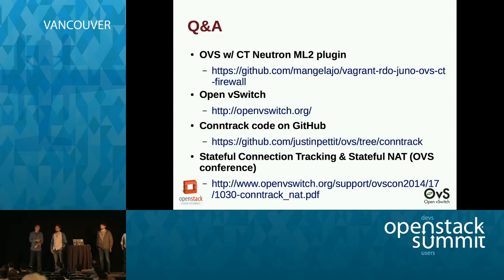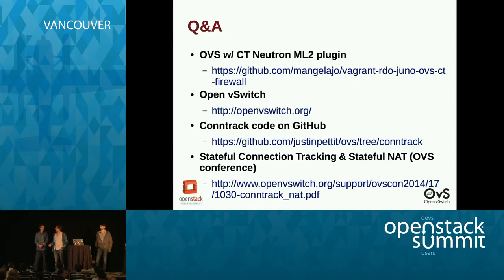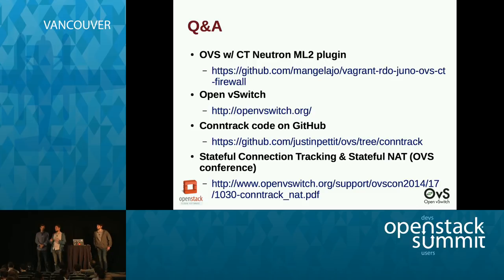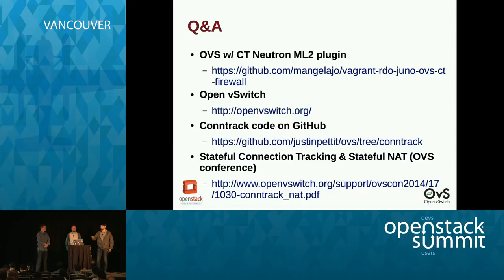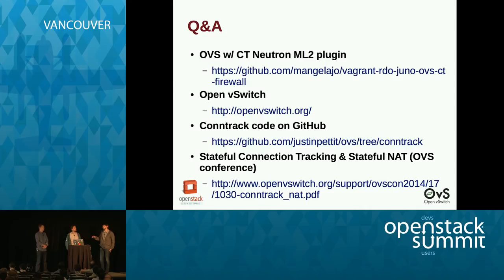Question: when using this implementation, do you only need to switch the security firewall driver? Yes, you only need to do that. There are a few changes to Neutron to properly communicate to Nova that we don't need the hybrid VETH driver, but that's all so far. Also keep in mind there may be parts in the OVS agent where you may need to change the priority rules, because now that everything is living in the integration bridge, some priorities may need to change. The rules themselves will be completely compatible, but you will need the new version of OVS with connection tracking.